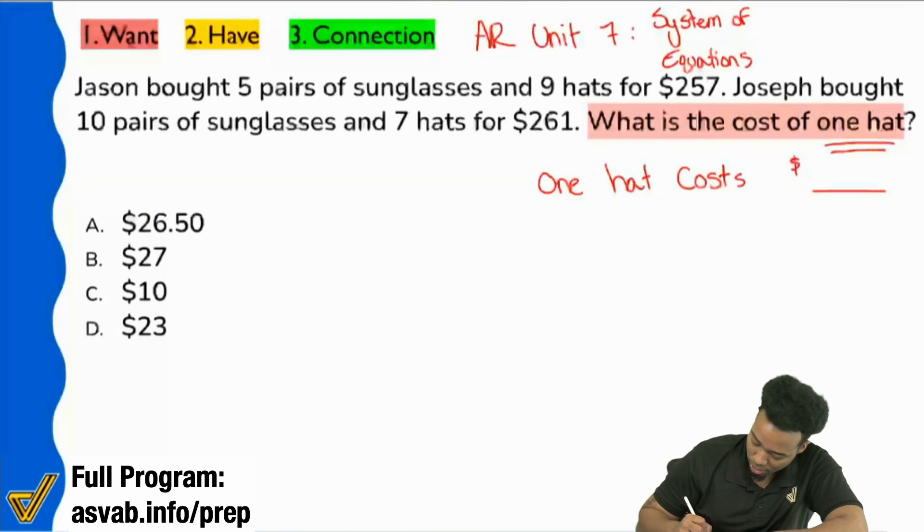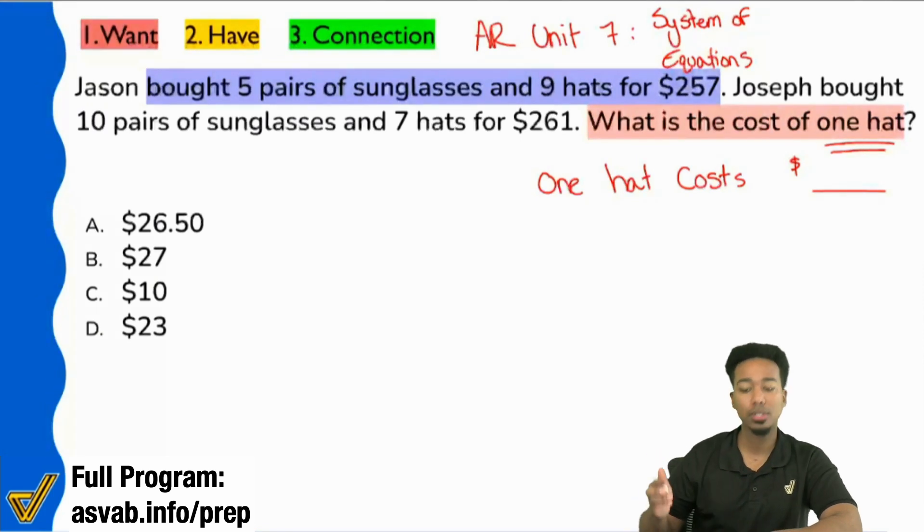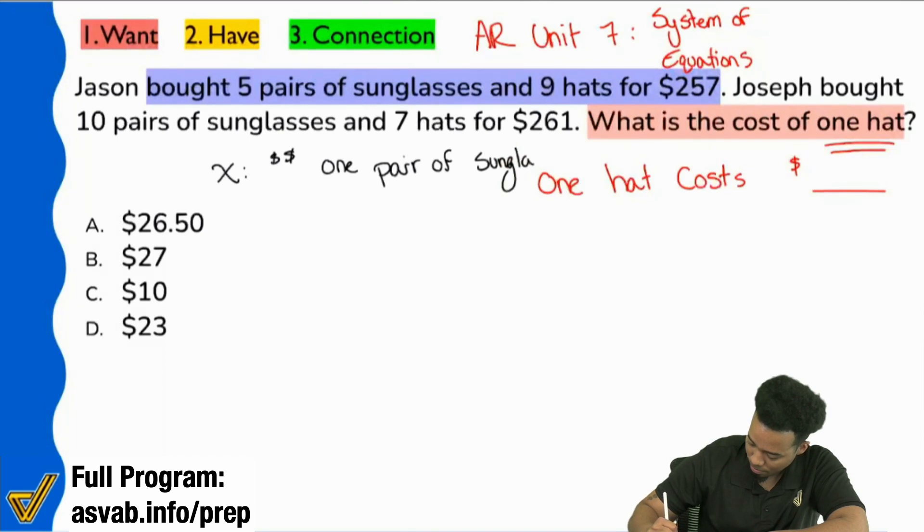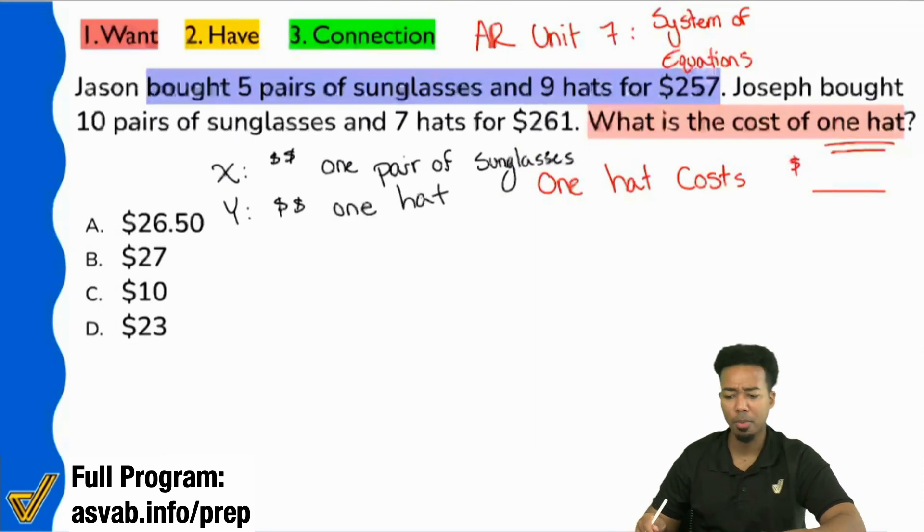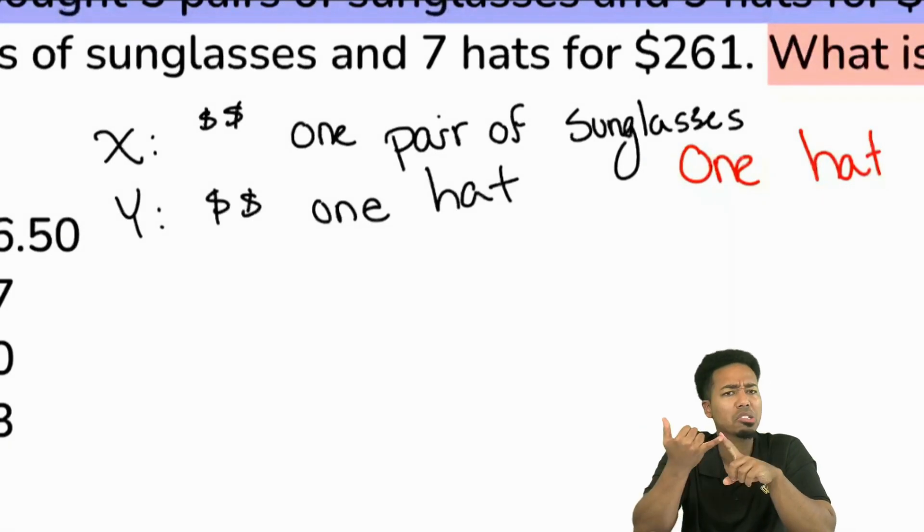Watch what's going to happen here. Let's check out this first sentence. Jason bought five pairs of sunglasses and nine hats for $257. Everyone, let's go ahead and say, let's pretend that X is the cost of one pair of sunglasses. And then let's say that Y is the cost of one hat. So far, before I even continue, is it okay with you? If I do that, X will say that that's the cost of one pair of sunglasses. Y, cost of one hat. Is that okay with you?